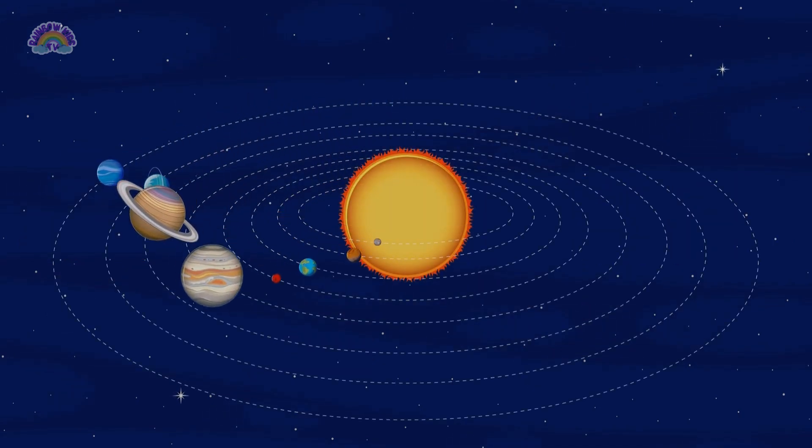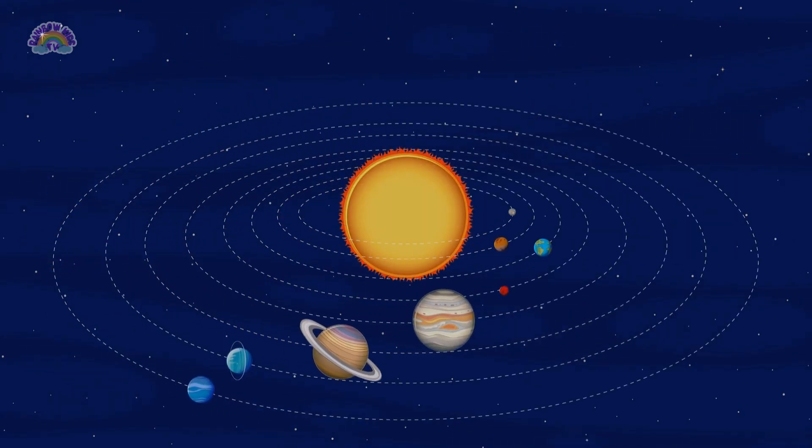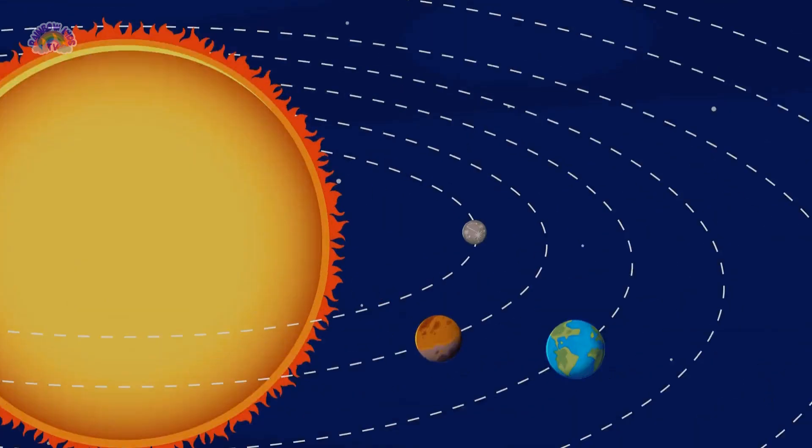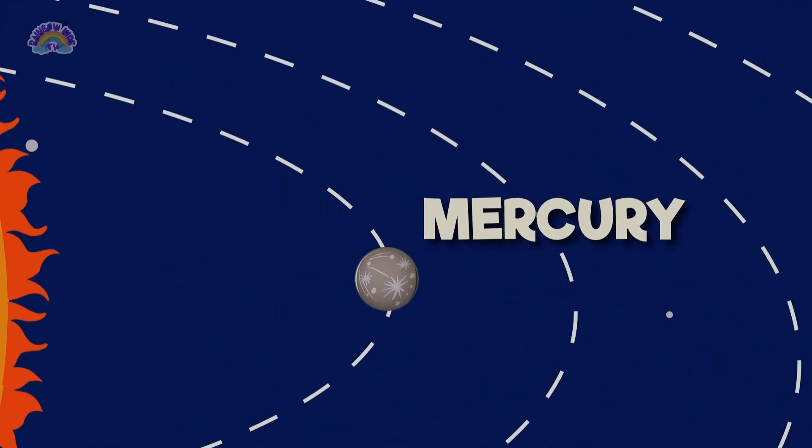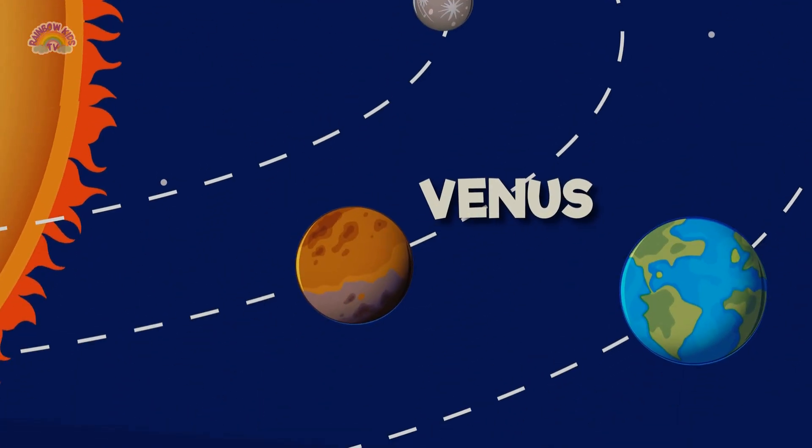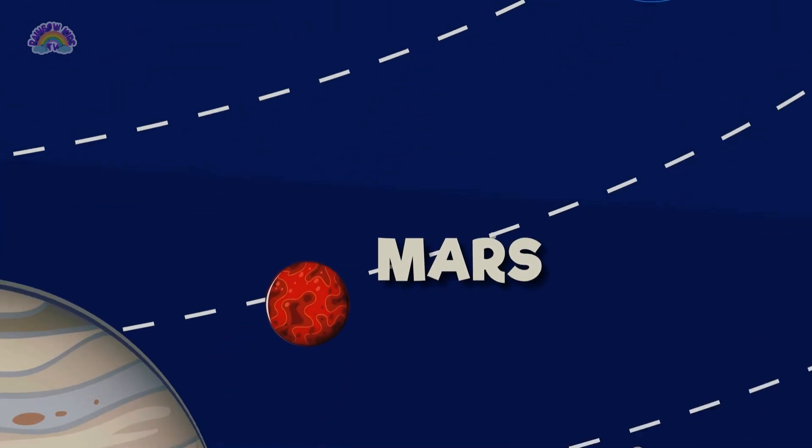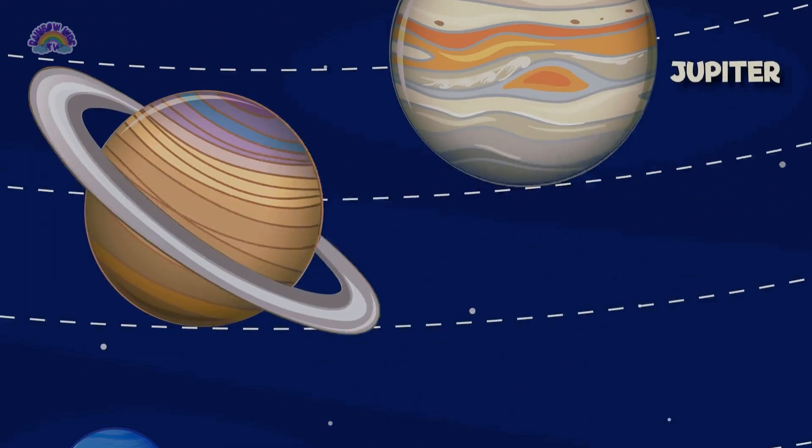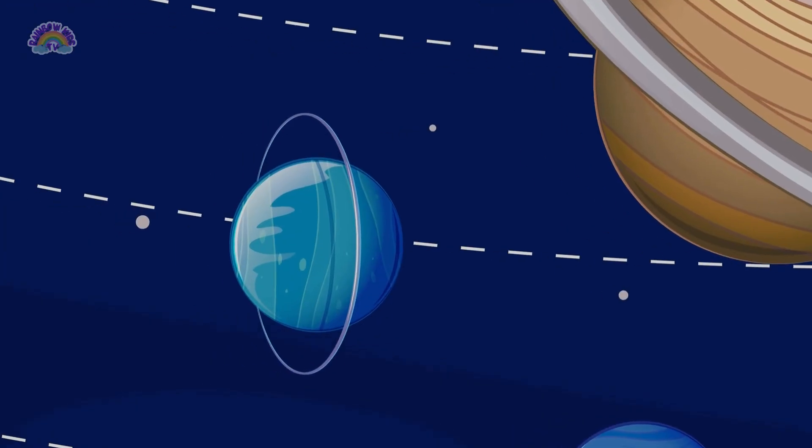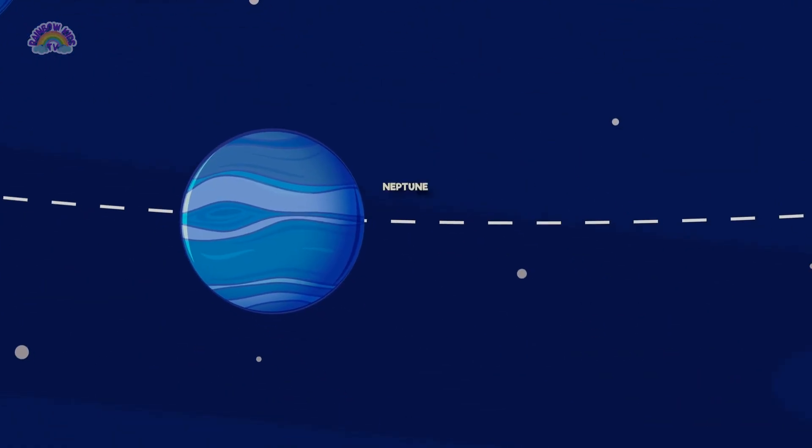At the center is the Sun and there are eight planets that go around the Sun: Mercury, Venus, Earth, Mars, Jupiter, Saturn, Uranus and Neptune.